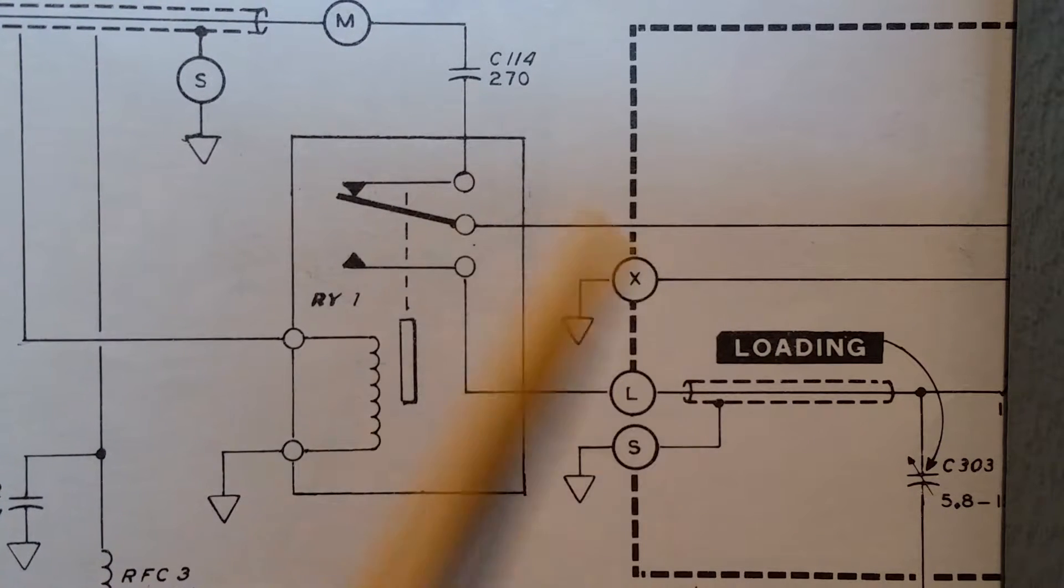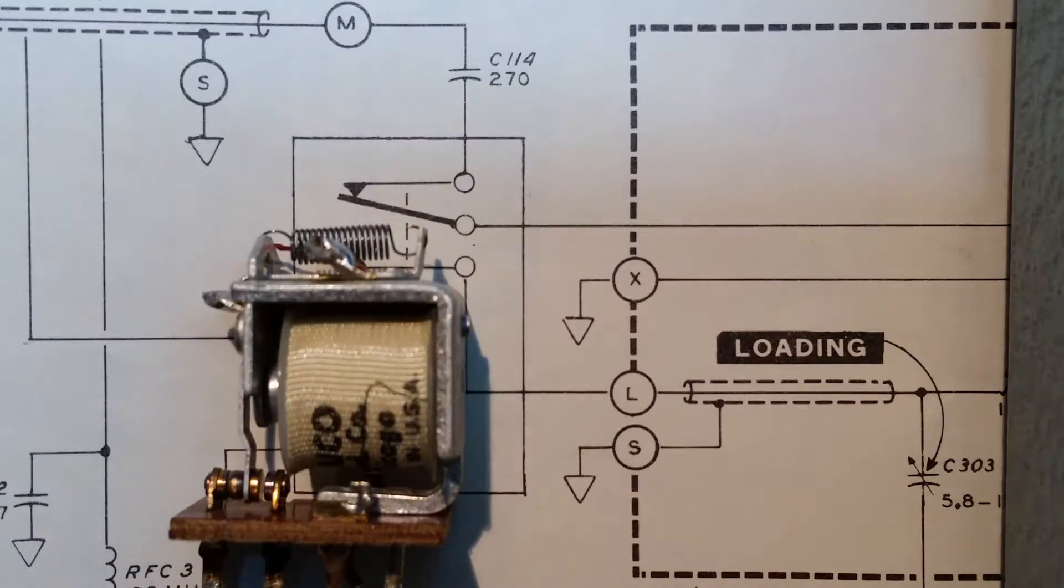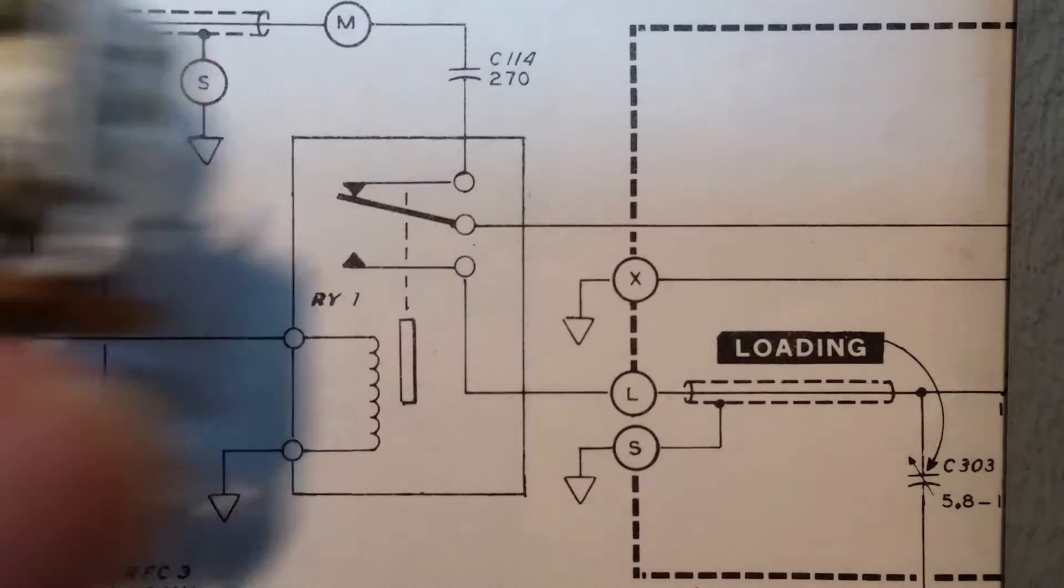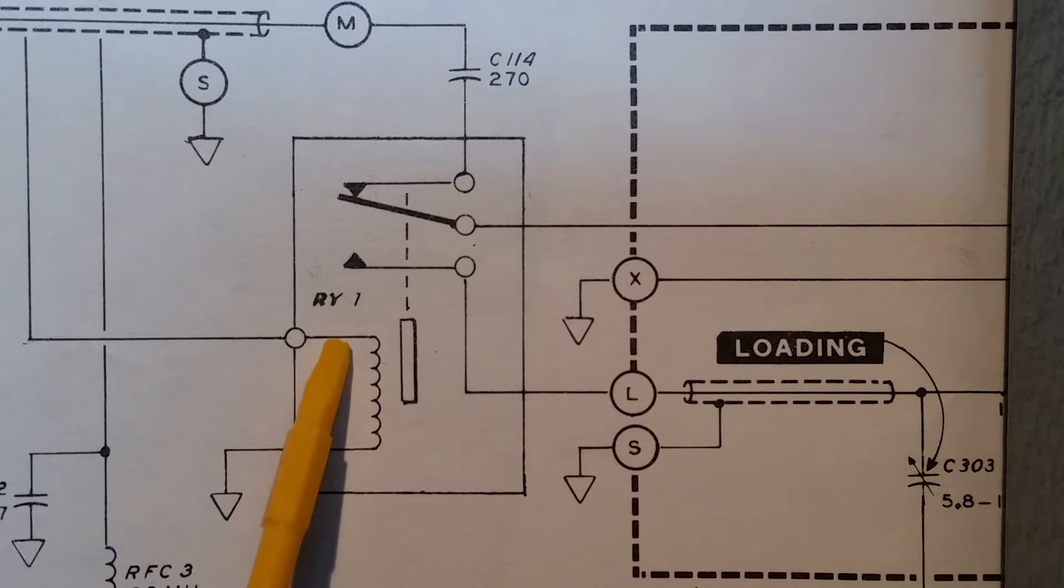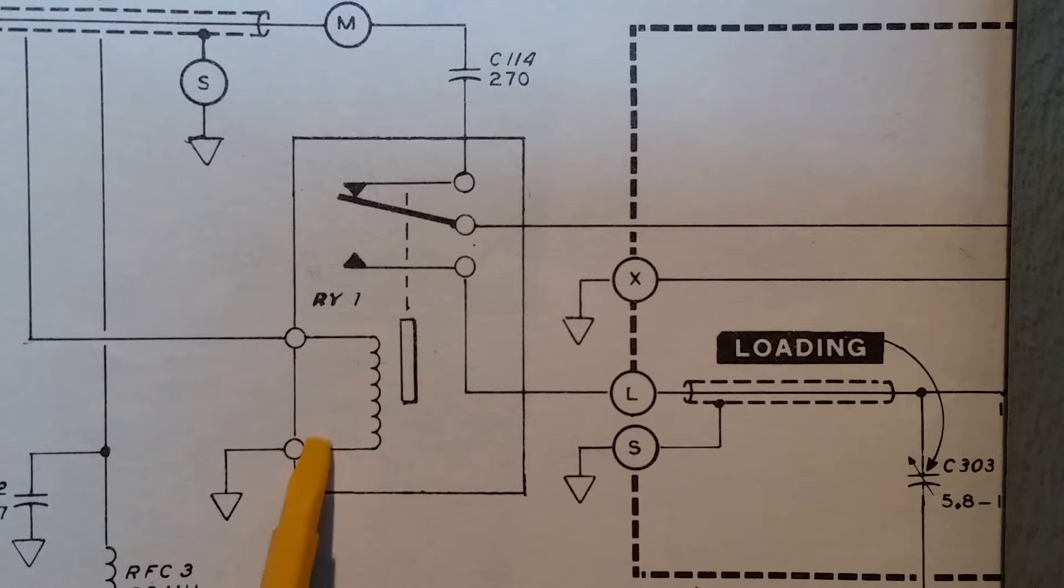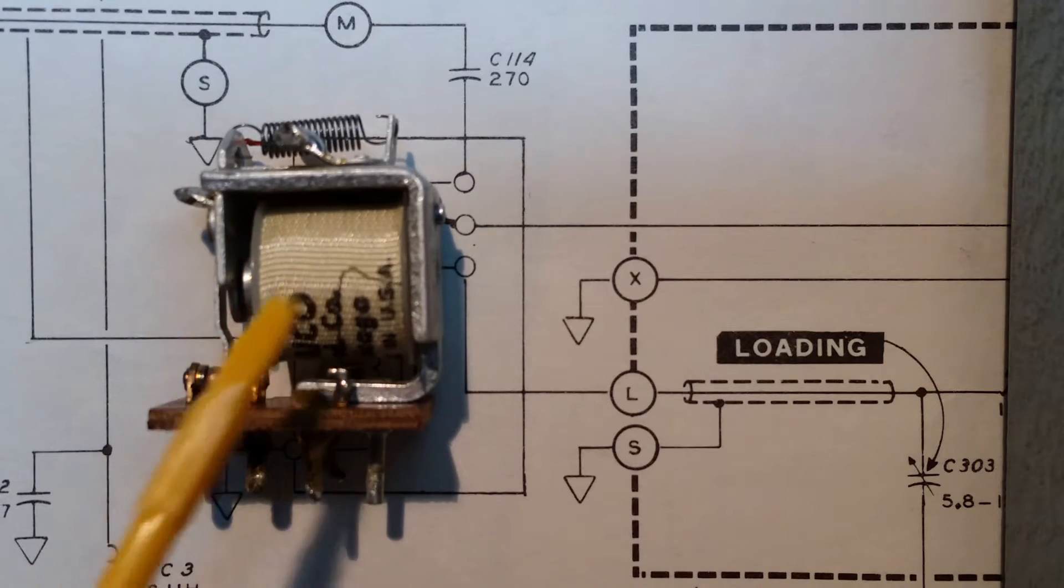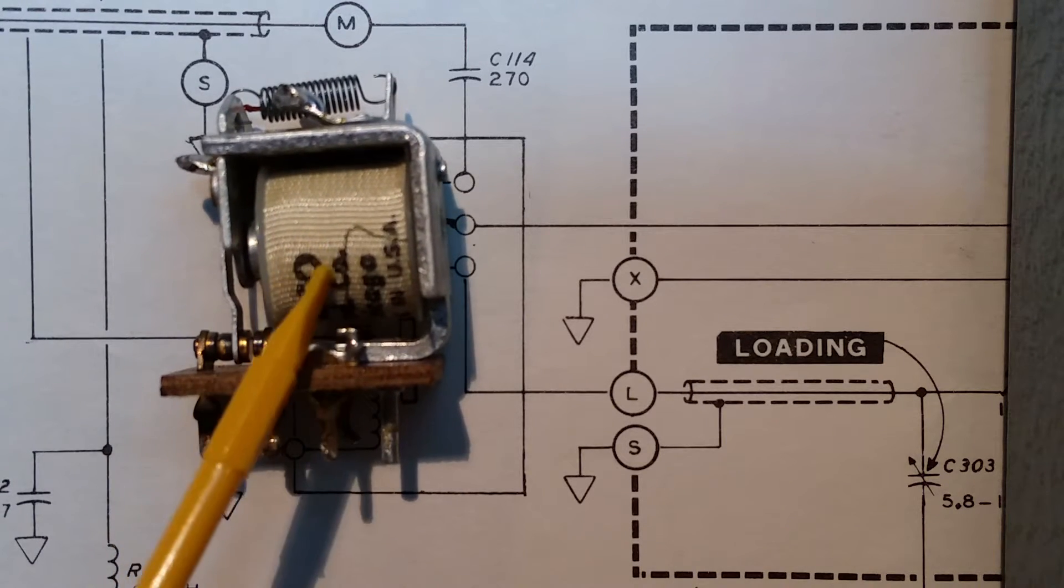This is the relay. So this is the relay itself. Problem is that when I put my meter on resistance, I could not measure anything here. So there was no resistance but the meter didn't go to zero or anything. So my guess is that in the coil, the wire is broken.